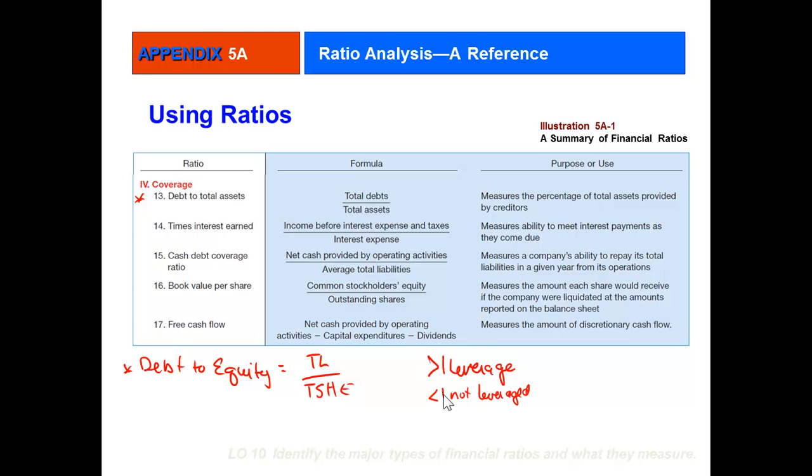Times interest earned is a quick measure of can you make your interest payments and how many times over can you make them. Cash debt coverage ratio looks at your cash flow statement, your cash flow from operations, to see if that cash generation is adequate to pay your average total liabilities all in one year. Book value looks at common shareholder's equity over outstanding shares—in other words, if the company was liquidated today, what would each share receive?